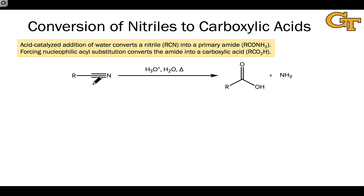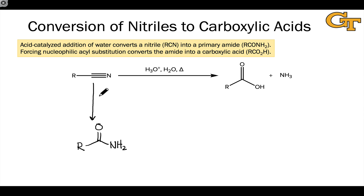The way this works is first an addition process in which the elements of water add across the nitrile to form an intermediate primary amide. Notice that this addition process is the reverse of the dehydration reaction we saw that converted primary amides into nitriles. Here, the use of excess water, acid, and heat converts the nitrile to a primary amide through addition rather than elimination.